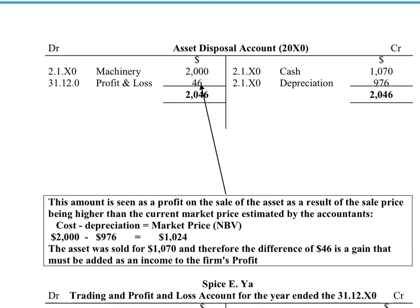So to our asset disposal account — in this case the machine asset disposal account — we transferred the historic cost of the machine by crediting the machinery account and debiting the asset disposal account. We also transferred the depreciation of $976, which appears on the debit side of the provision for depreciation account and the credit side of our asset disposal account.